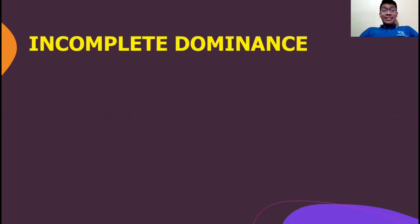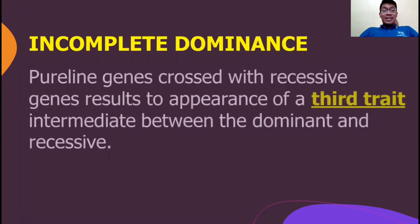Incomplete dominance is described as pure line genes crossed with recessive genes results to appearance of a third trait intermediate between the dominant and recessive. For us to visualize this, let's have this analogy.